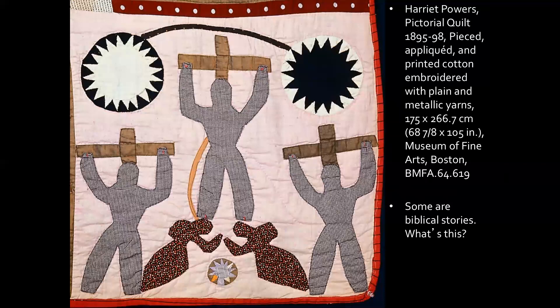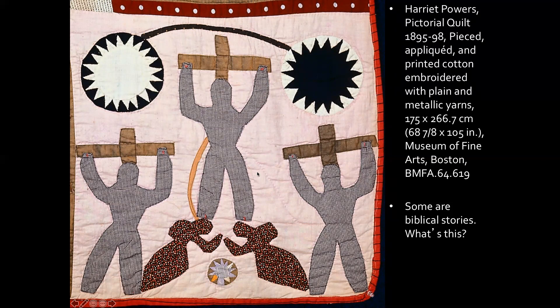This is the crucifixion of Christ. We have Christ in the middle and then the two thieves crucified with him. We have a couple of Marys down here — all of Christ's male followers except John had left him. Then his side was pierced, and we can see the blood and water coming out of it as explained in the Bible. Hence she didn't use the red color.